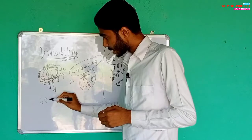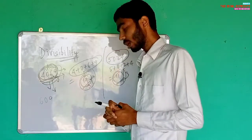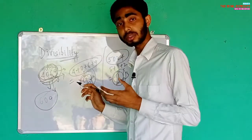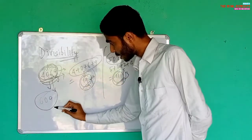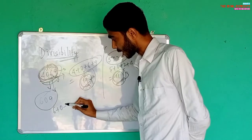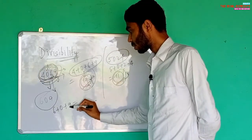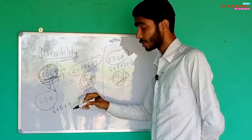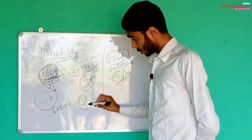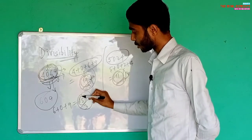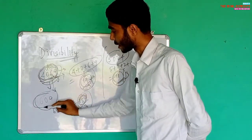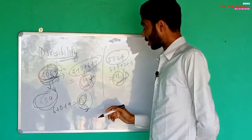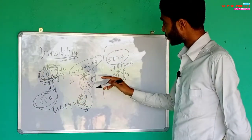Let's take another example: 6009. To check without division: six plus zero plus zero plus nine. The total sum is fifteen. Fifteen is completely divisible by three — fifteen divided by three equals five. So we can say 6009 is completely divisible by three.